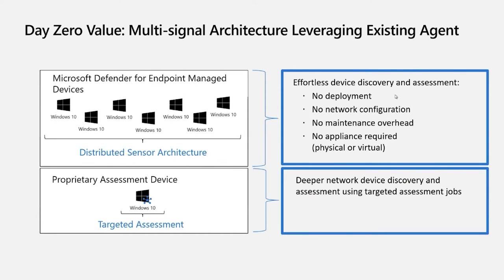There are two different discovery modes: basic and standard, for discovering non-managed devices. For network devices via SNMP, I'll cover that separately. What's interesting is that any Windows 10 device onboarded to Defender for Endpoint can perform this discovery — you're not deploying a separate agent. Defender for Endpoint is built into Windows 10 and already configured to do this out of the box. You can scope it to specific devices or networks. There's no special network configuration — no firewall ports to open, no routing or switching changes. Just make sure the feature is enabled in Defender for Endpoint.